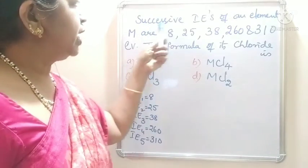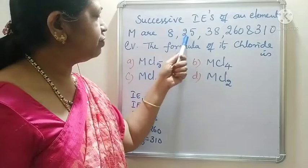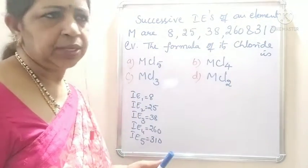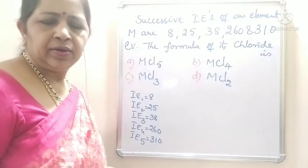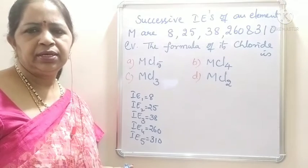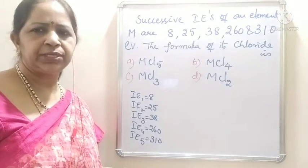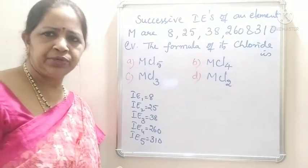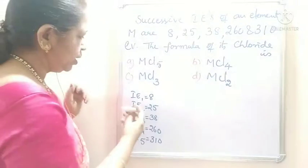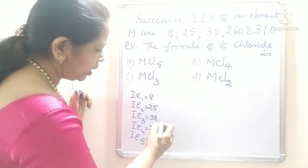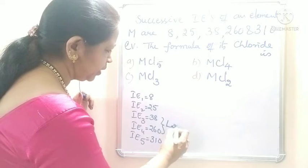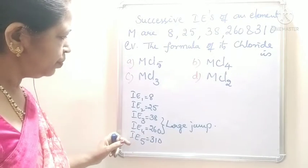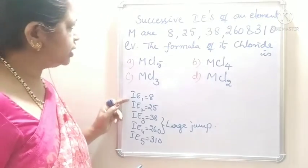The next question: successive ionization energies of element M are 8, 25, 38, 260, and 310 electron volts. What is the formula of its chloride? Ionization energies increase with the removal of more electrons due to increasing effective nuclear charge. Here IE1 = 8, IE2 = 25, IE3 = 38, IE4 = 260 — a large jump is observed between IE3 and IE4. IE5 is only slightly greater than IE4. That means there are 3 valence electrons in element M.